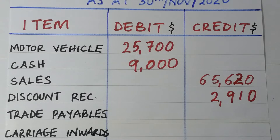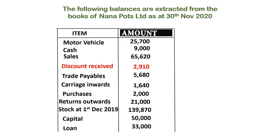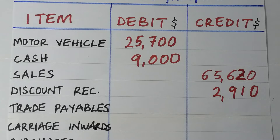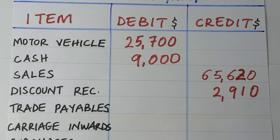Then we have what we call trade payables. The other name for trade payables is creditors — people who give us goods that we are expected to pay back later. Creditors have a credit balance, as they represent a liability to the business.